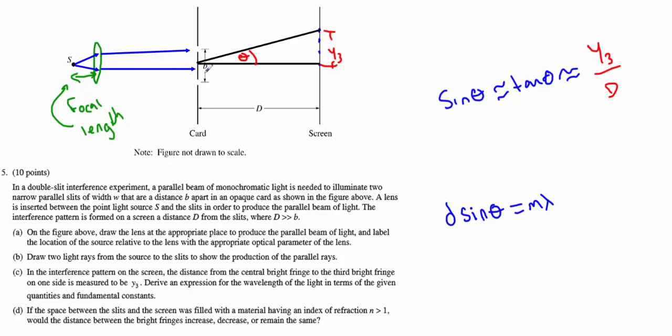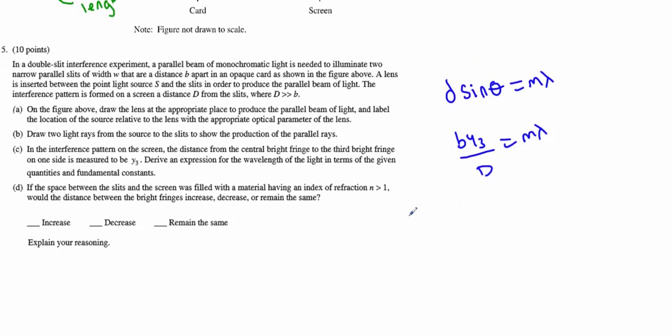Little d needs to get replaced with the proper variable listed, which is little b. So I'm looking at b Y sub 3 over capital D equals m lambda. Now we need to put this in terms of wavelength. So the wavelength is going to be b Y sub 3 over D, and m is going to be 3 because it's my third bright fringe. That is the answer. They're all in terms of the variables listed or given or fundamentals.